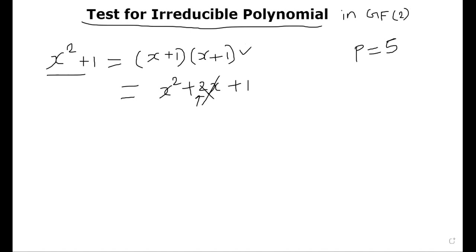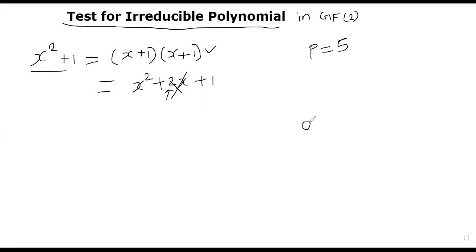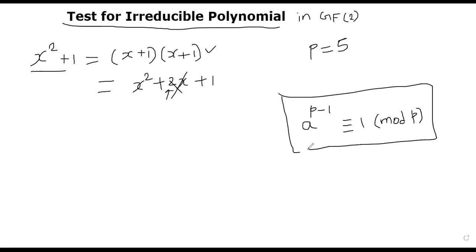We looked at Fermat's theorem for integers to check whether a number is prime or not. We randomly generated a lot of witnesses and checked whether a to the power p minus 1 is congruent to 1 mod p. We randomly generate a lot of a's. If this condition is violated, then we can conclude that p is not a prime. However, if it is satisfied, we cannot conclude p is prime or not. We try for lots of a's and proved that if p itself is not a prime, it is easy to find an a to show that this particular property holds. Therefore, we can conclude p is not a prime. This is something we already discussed when we talked about Fermat's theorem-based primality testing.